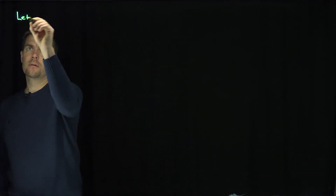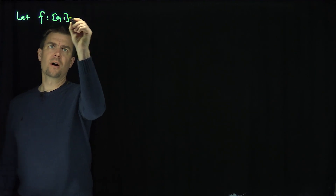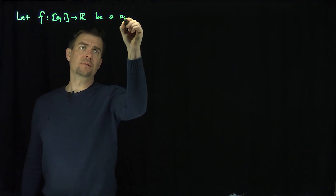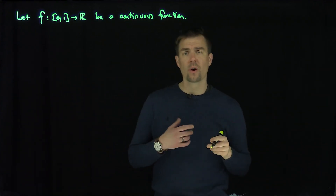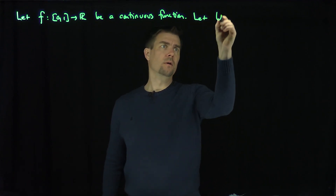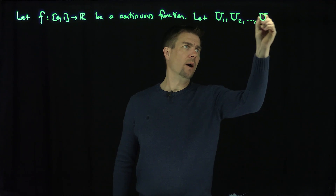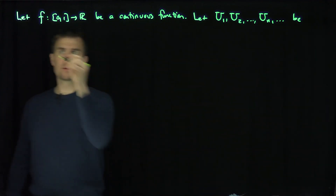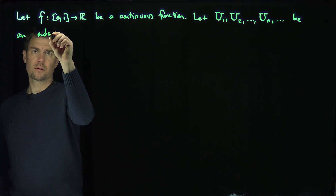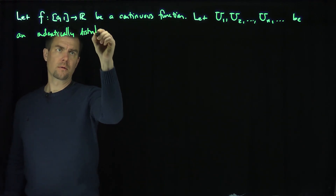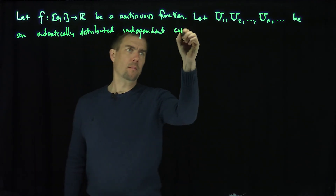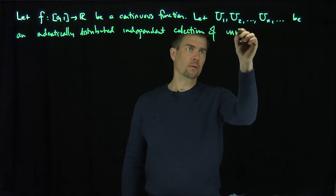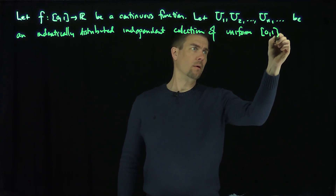Hello students. In this video we'll discuss Monte Carlo integration. So let's let f map into R be a continuous function — in particular, this function is bounded. We're going to let u1, u2, ..., un be an identically distributed independent collection of uniform 0-1 random variables.